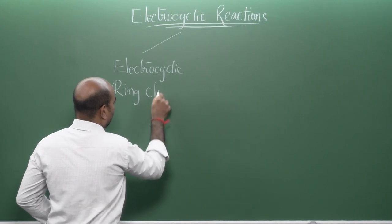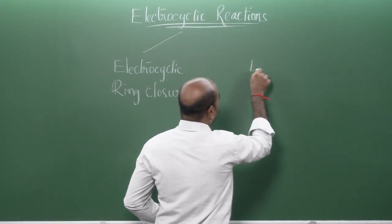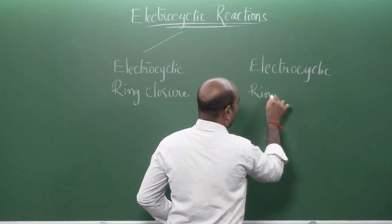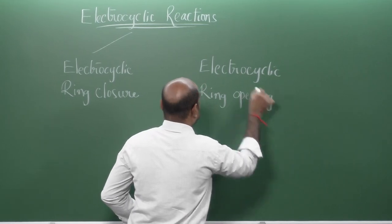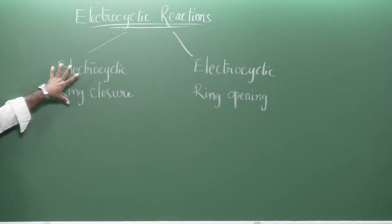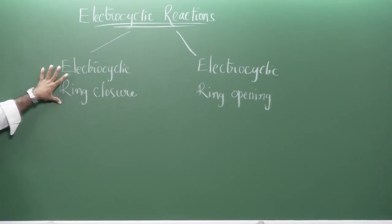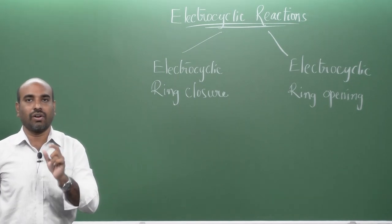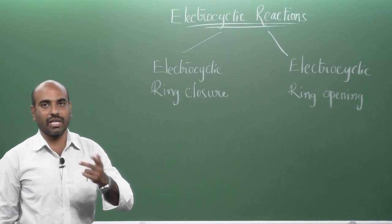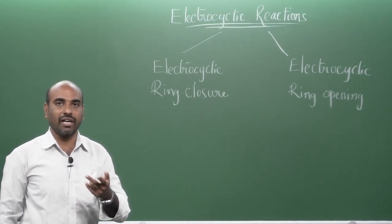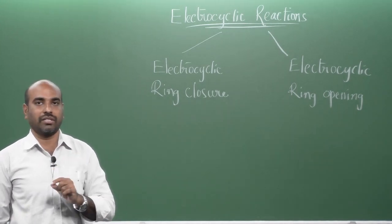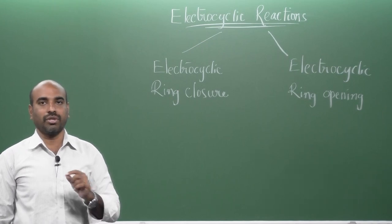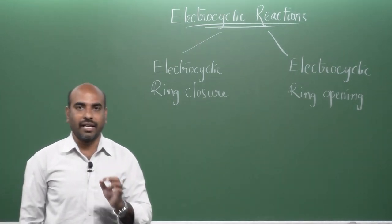The electrocyclic ring closure reaction can be defined as the involvement of an acyclic conjugated polyene system in developing a new sigma bond via the cyclic reorganization of the pi electrons, and at the end producing a cyclic molecule. This is called the electrocyclic ring closure reaction.